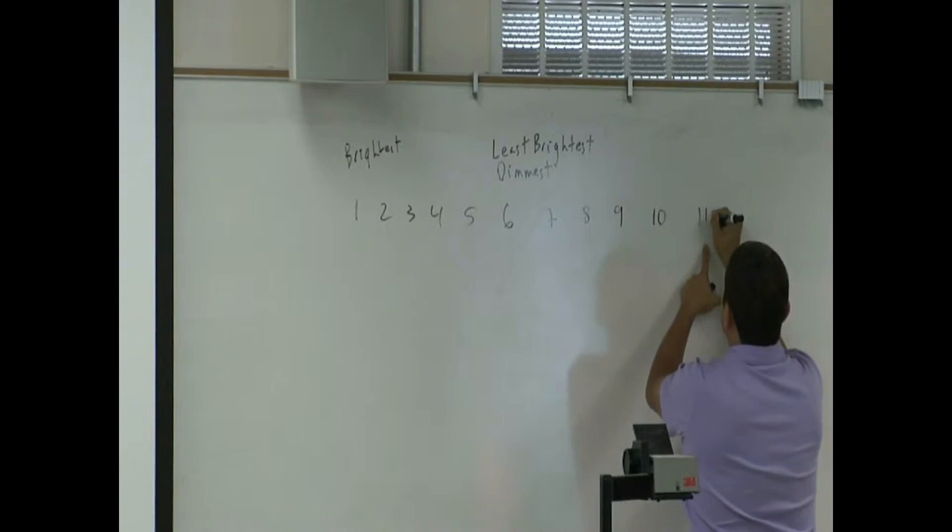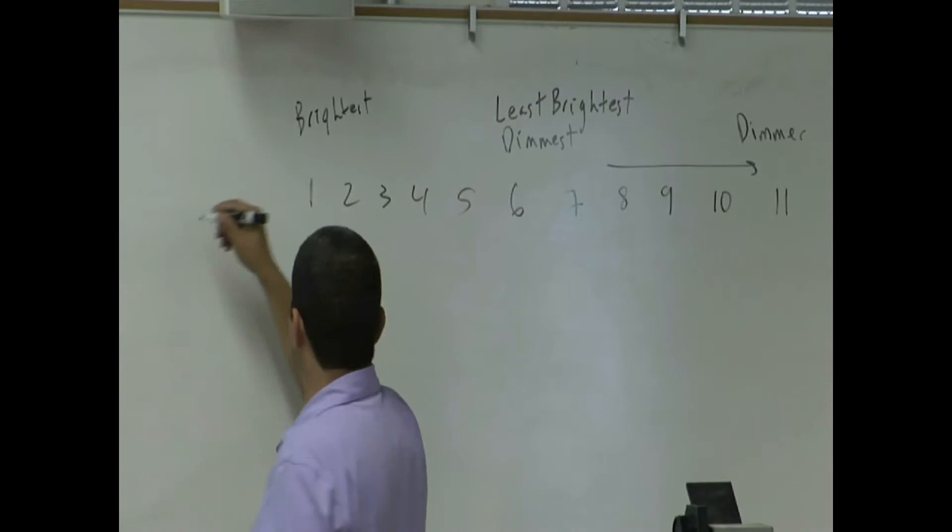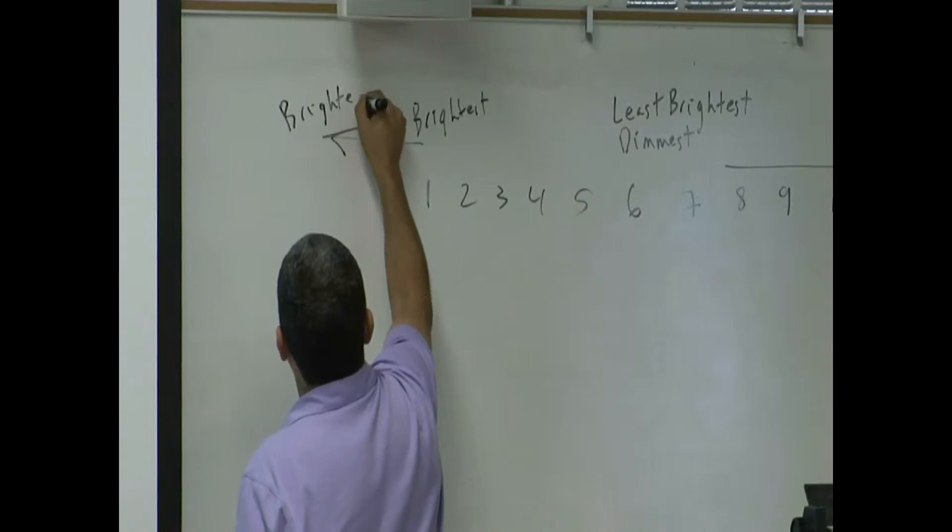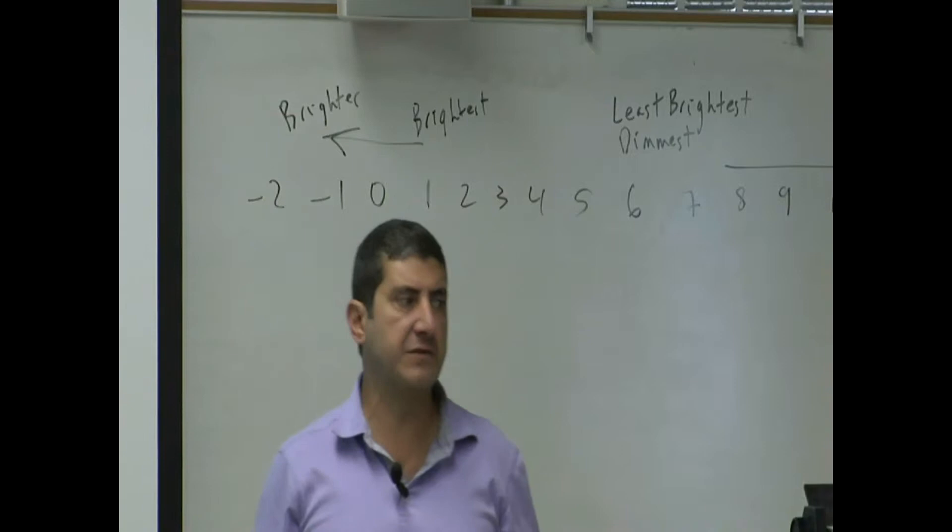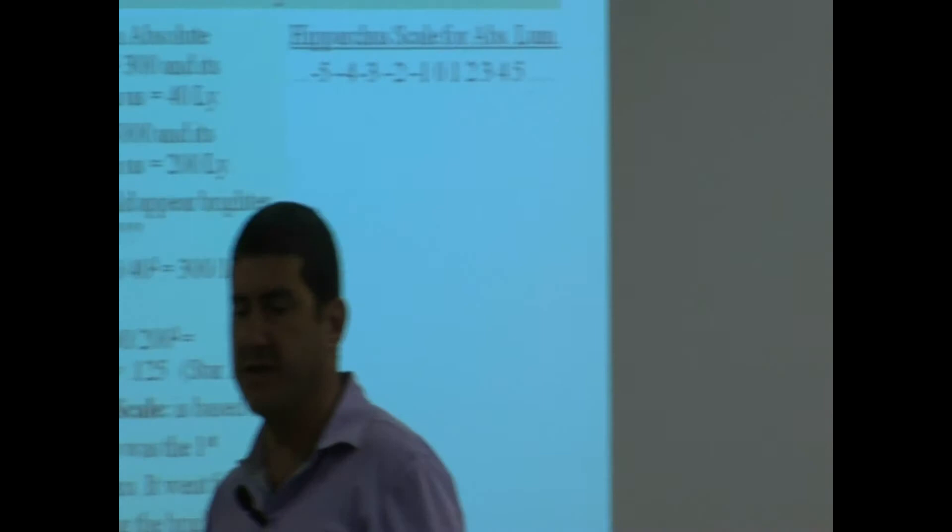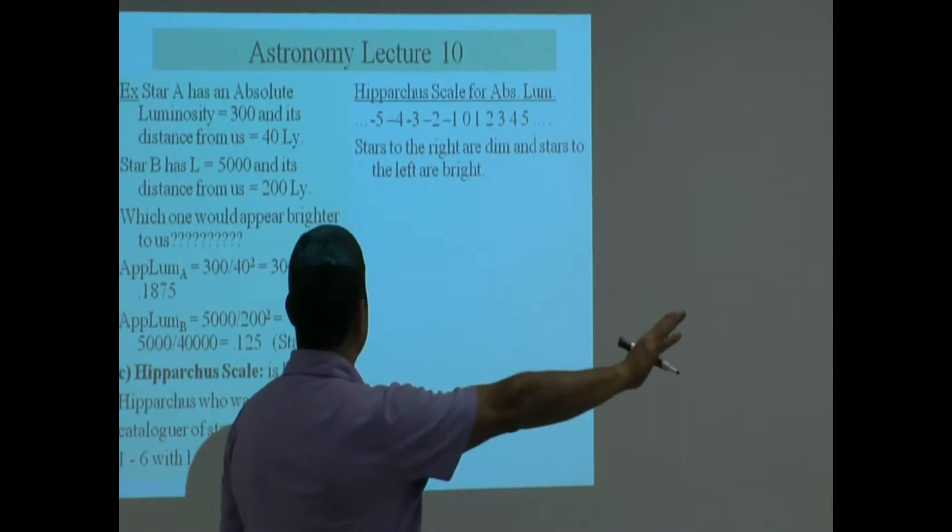As you go this way, you get dimmer. And the funny thing is the scale we had to expand this way too. So as you go this way, you get brighter. So we're kind of forced to go to negative numbers. Does that mean the luminosity of the star is negative? No. It's just the scale that we made. And if you get a negative number on this scale, that just means you're even brighter. The more negative, the brighter you are. So stars to the right are dim, stars to the left are bright.